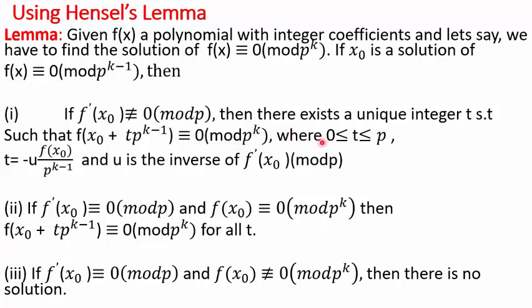Sometimes the t value might be negative, but we take its positive congruent value. So what exactly is t? t is nothing but -u · f(x₀) / p^(k-1), where u is the inverse of f'(x₀) mod p. That was the first case.